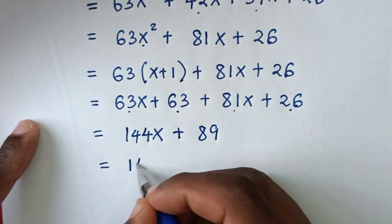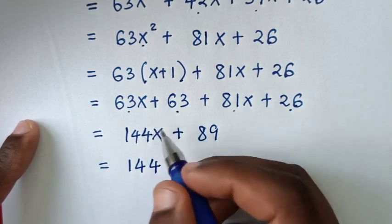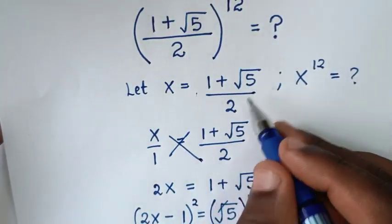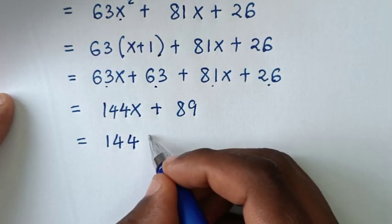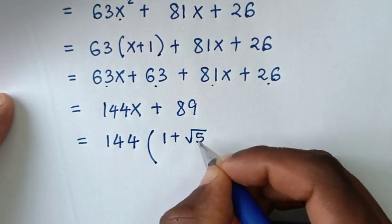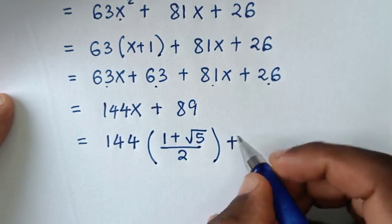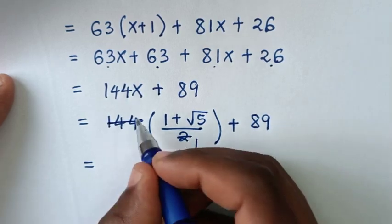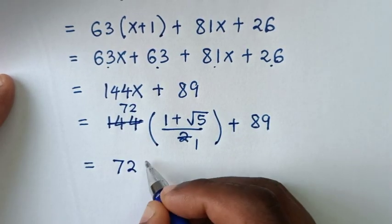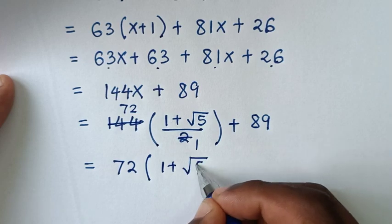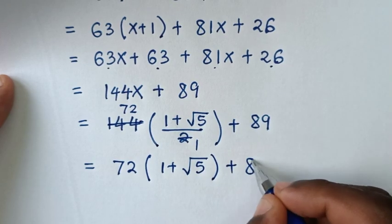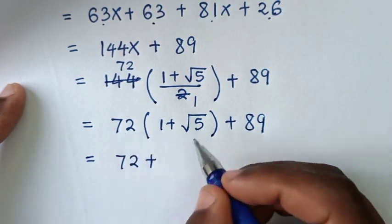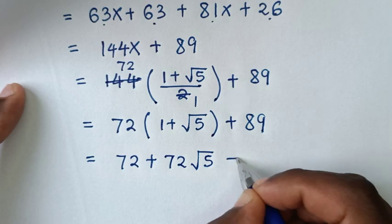We will now substitute the value of x. Before we let x equal to (1 plus square root of 5) over 2. So the expression is 144x plus 89, giving 144 times (1 plus square root of 5) over 2, then plus 89. This cancels to 72(1 plus square root of 5) plus 89, which equals 72 plus 72 square root of 5 plus 89.